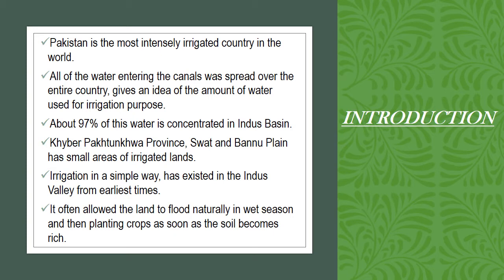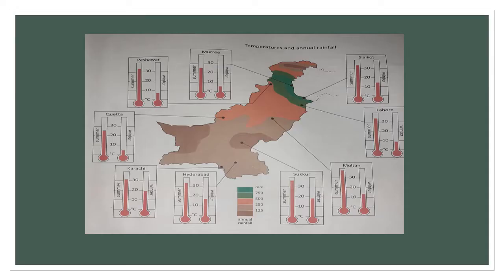This gives the hint of the water available in the country, and about 97 percent of the water is in the Indus River. Irrigation is said to be the most easiest way in the olden times. This map is taken from your book on page number 29, and it is showing the temperatures and annual rainfall.